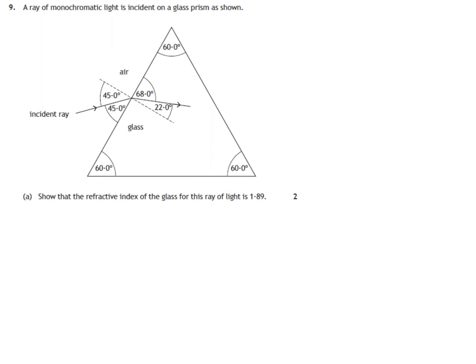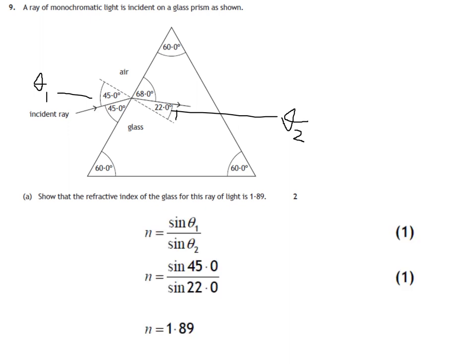Now, the tricky bit for this question is working out which angle is which. So hopefully, you remember, we always measure an angle from the normal to the light ray. So that means this one here is theta 1. And from the normal to the light ray, this means this one is theta 2 because it's within the glass or the prism. So then we can use our equation, n is sine theta 1, and we plug in the numbers.